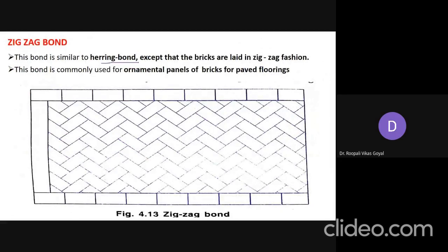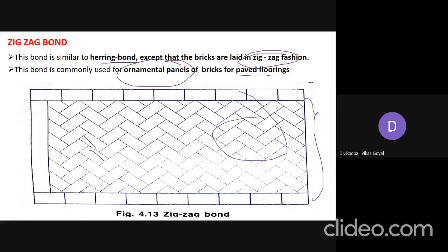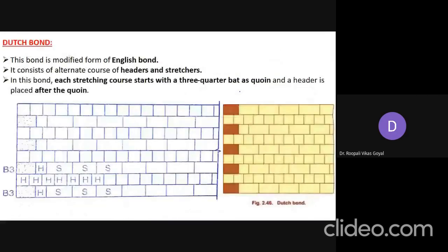Zigzag bond is similar to herring bond but arranged in a zigzag fashion. It can give an ornamental finish to an elevation or be used for paved flooring. These inclined bonds — diagonal, herring, and zigzag — are all equally useful for brick paving.